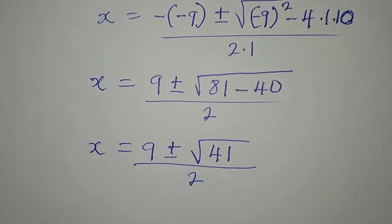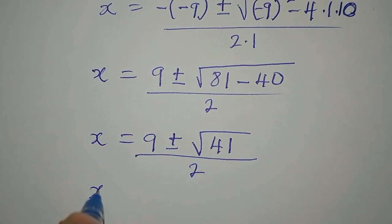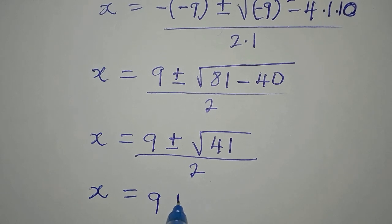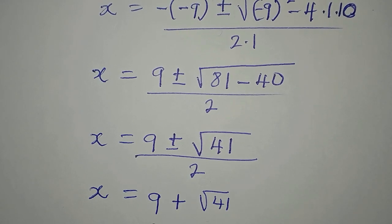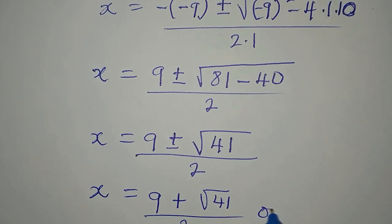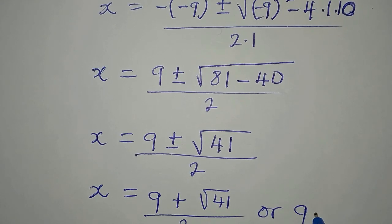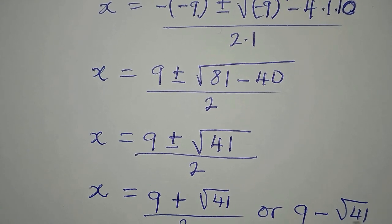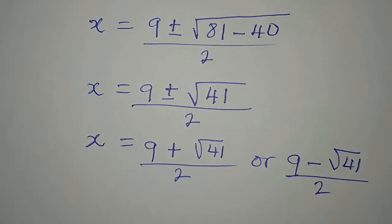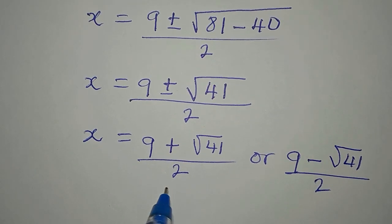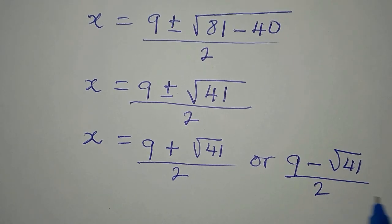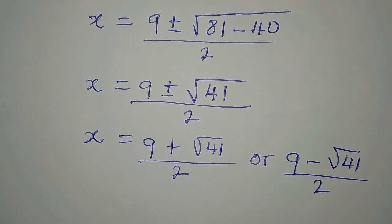So we are saying that our x is equal to 9 plus square root of 41 over 2 or 9 minus square root of 41 over 2. So this means that we have two values of x from here. But we'll also get the values of y. So we'll get the corresponding value of y.